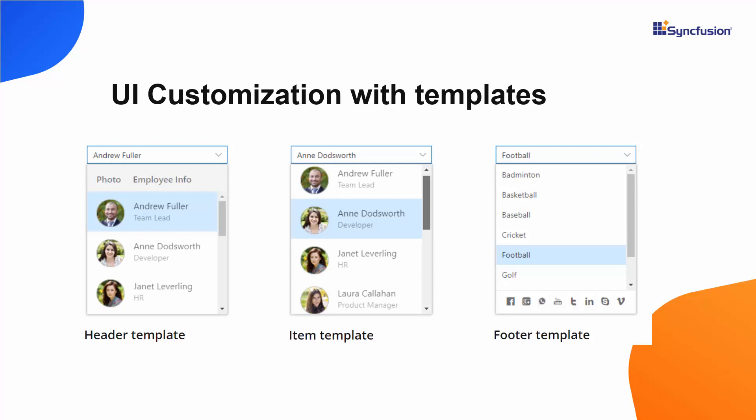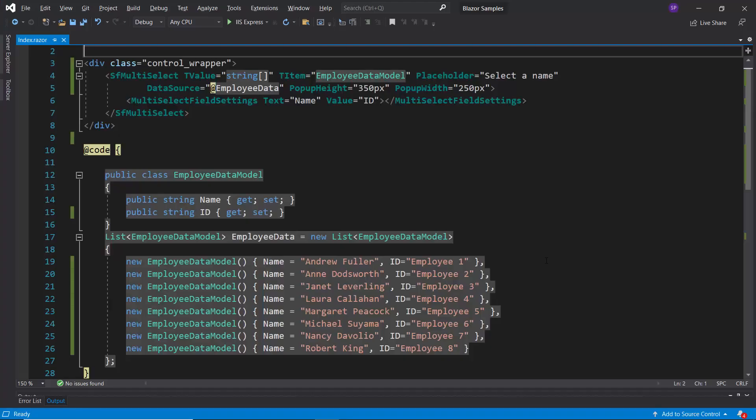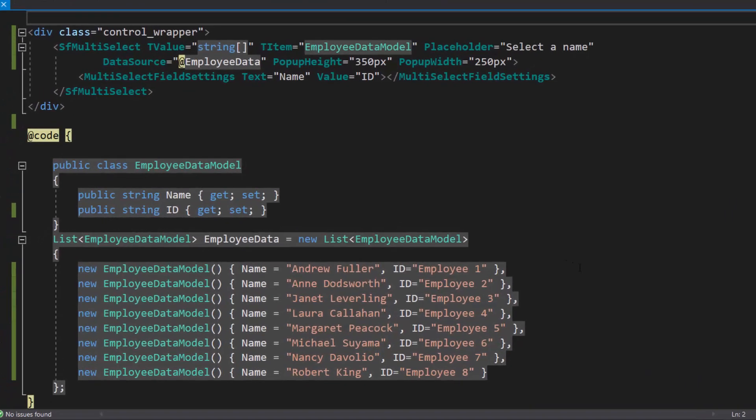Look at this example. You can see the multi-select drop-down pop-up showing employee names and images. Each list item is split into two columns — one displays the name and the other displays an image. Also, you can see the multi-select drop-down pop-up has a customized header and footer. Now, I will show you the code to achieve this customization using an existing Blazor multi-select drop-down application.